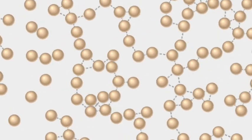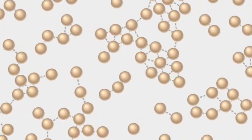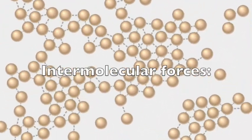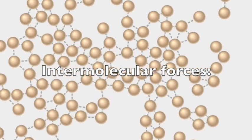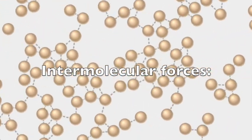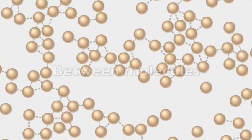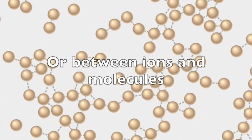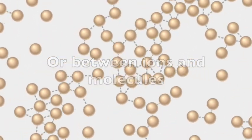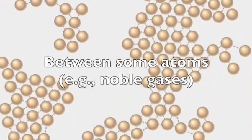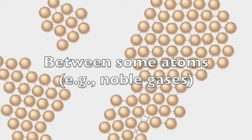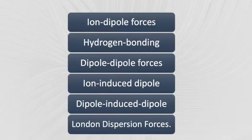As we discussed in the previous video, intermolecular forces are the coulombic interactions — the electrostatic attractions between molecules or between ions and molecules, or between some atoms such as noble gases. There are several different types. Some types, like ion-dipole and hydrogen bonding, tend to be very strong.